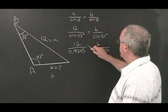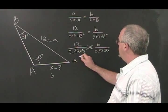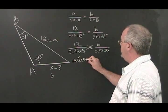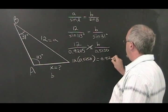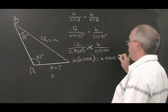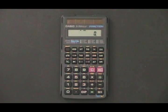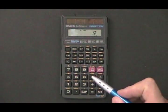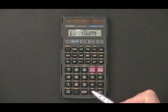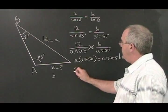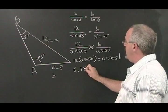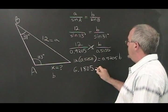Cross multiplying, we get 12 times 0.5150 is equal to 0.9205B. 12 times the sine of 31 is equal to 6.1805. This gets replaced by 6.1805 in our formula.